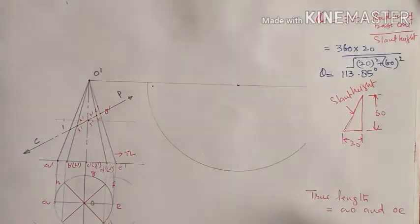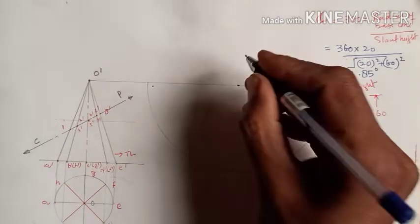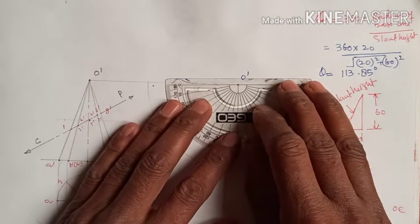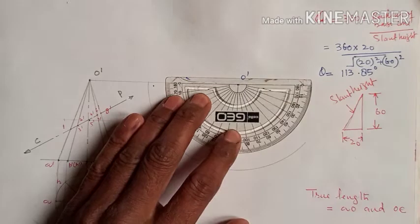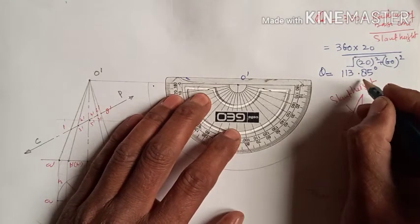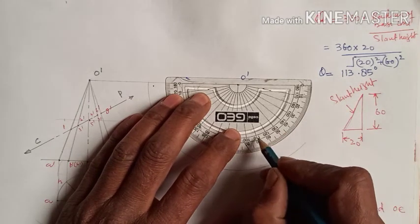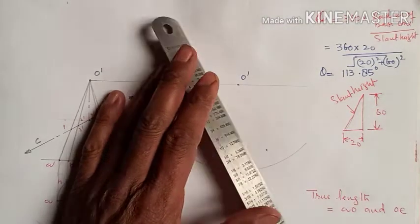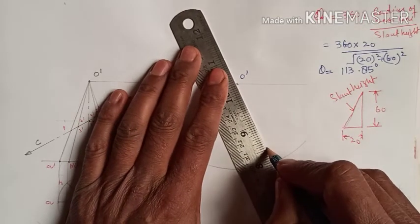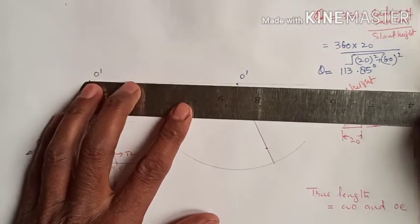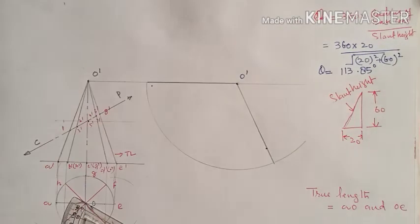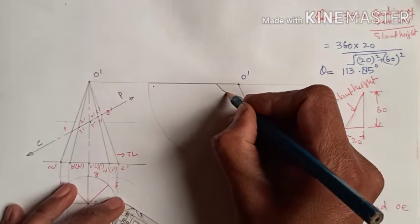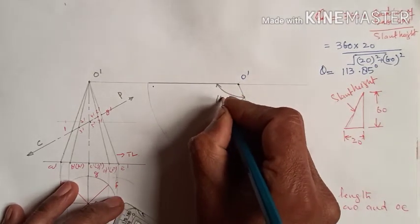We draw the arc keeping O' as center. Using a protractor, we mark the calculated angle of 113.85 degrees. We connect both ends of the arc to O' with straight lines to complete the sector, which is the base shape of our development.